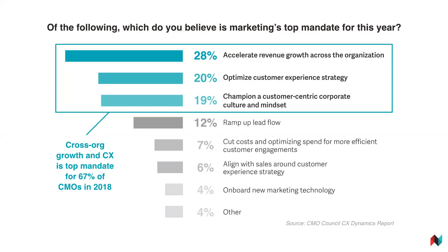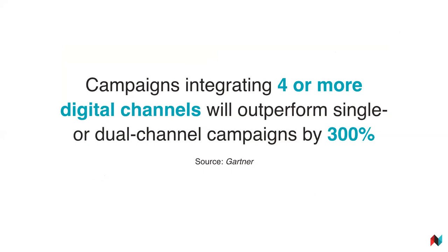So that tells us that improving our ability to integrate is important — but why is it something that CMOs are so focused on? I think it's really important to look at this Gartner study, which shows us that integrated marketing campaigns that use three or more channels outperform traditional campaigns by 300%. Having a fully integrated marketing organisation facilitates the building out of those campaigns on a regular basis.